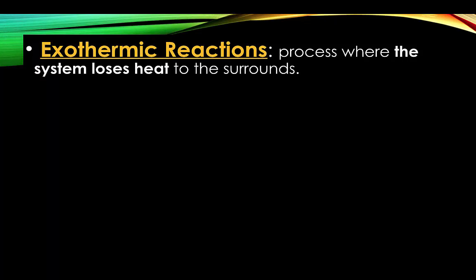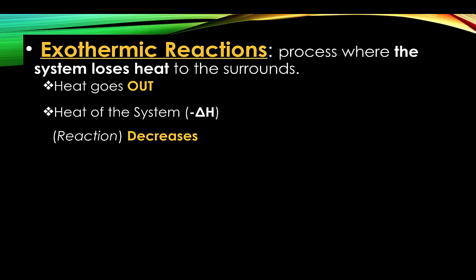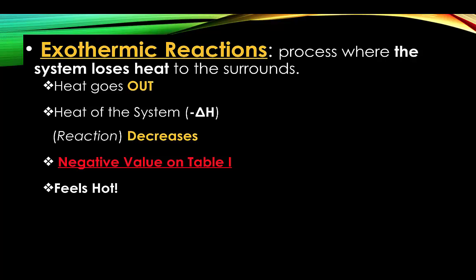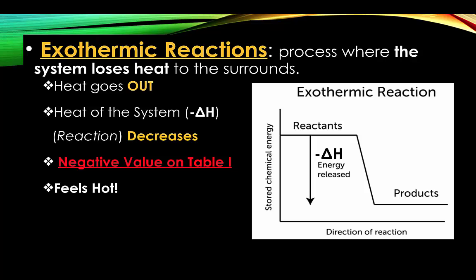An exothermic reaction is a process where the system loses heat to the surroundings — heat is leaving or going out of the system. Looking at Table I, this will show a negative delta H, which means the heat of the reaction decreases. It will feel hot to us because the system is losing its heat and we are absorbing it. On a potential energy diagram, the heat of the reactants will be much higher than the heat of the products, telling us that reactants have to lose energy to create the products.